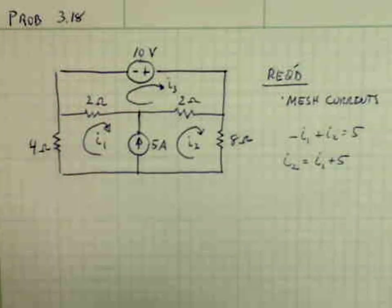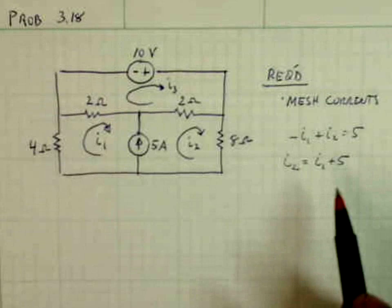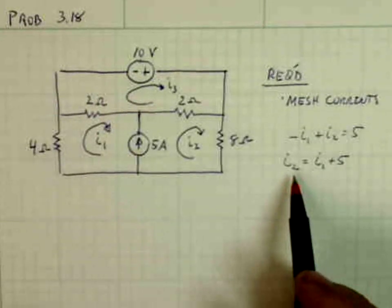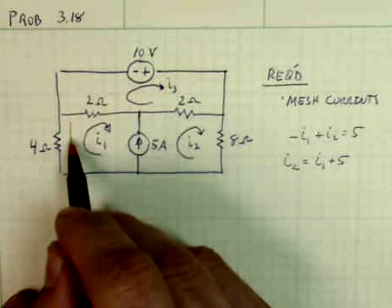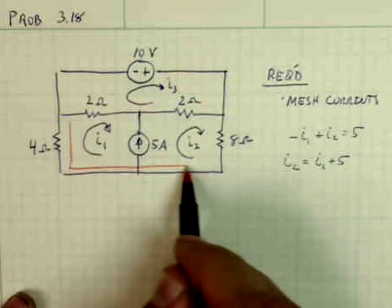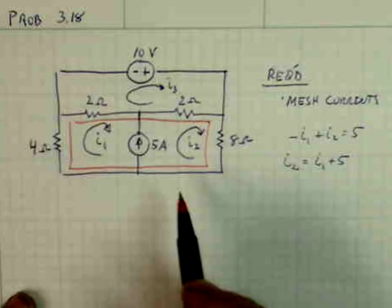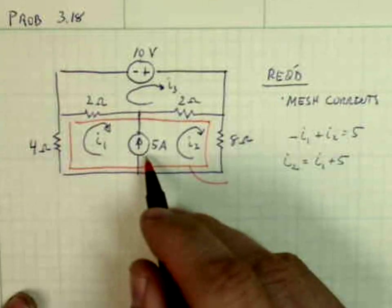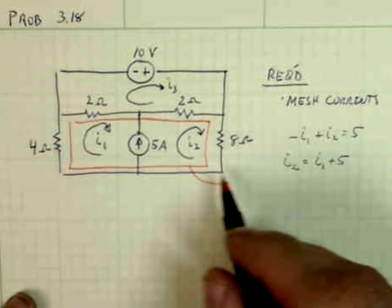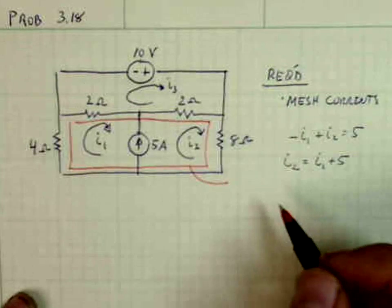And we should also notice that this actually defines this super mesh. So we have a super mesh right there. This 5 amp source makes I1 and I2 a super mesh.